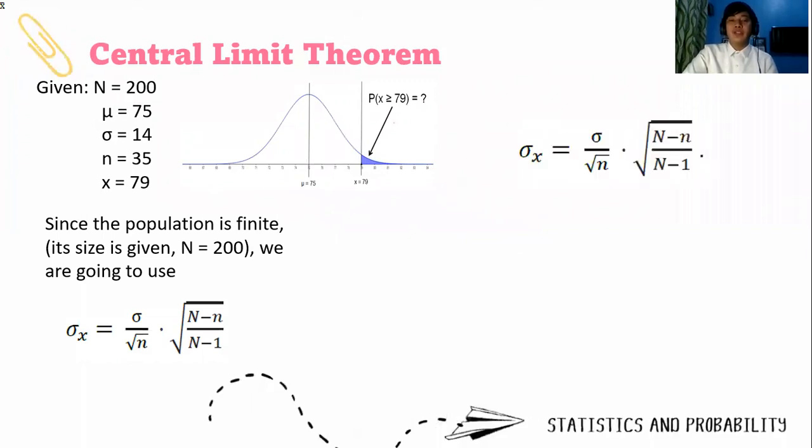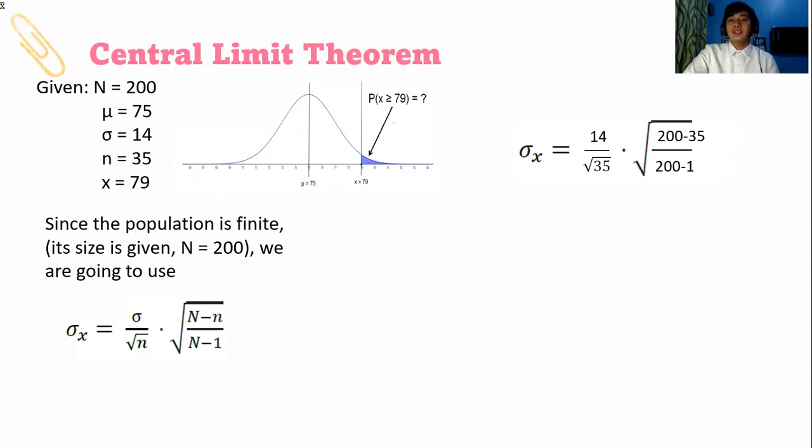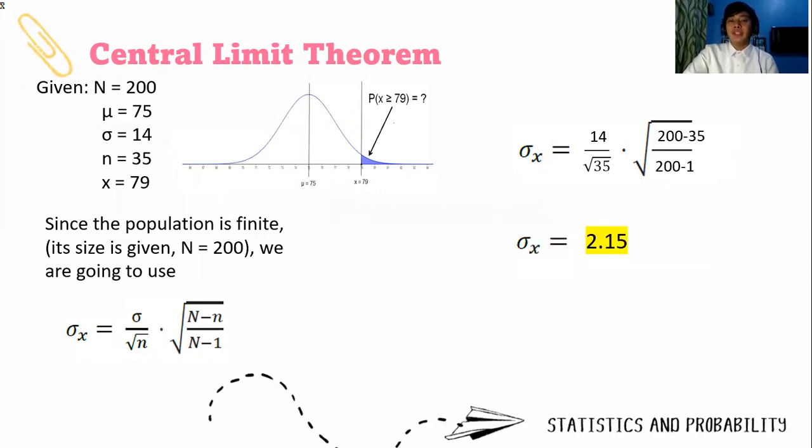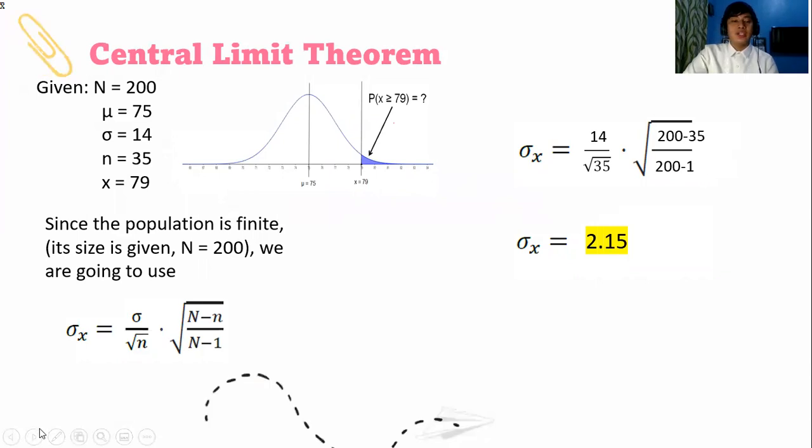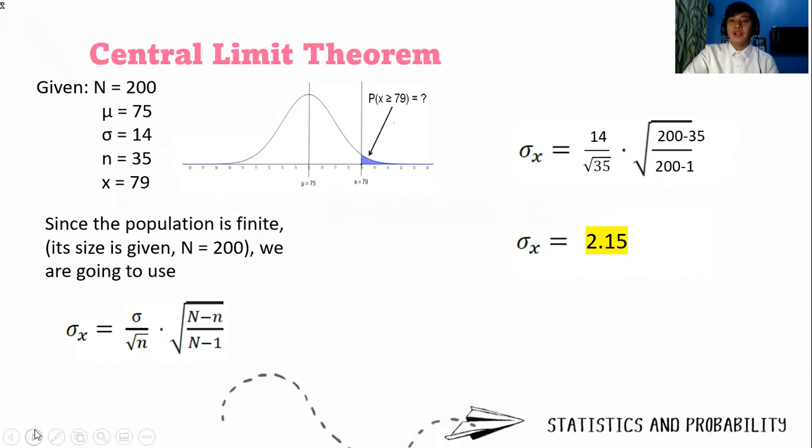Substituting the values, we have 14 over the square root of 35 times the square root of 200 minus 35 over 200 minus 1. Computing for the value using a scientific calculator, you will get 2.15. Round it off to two decimal places.